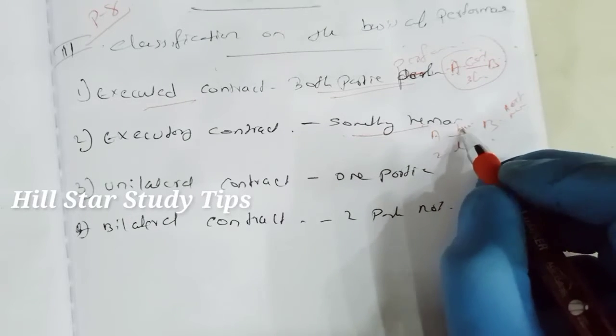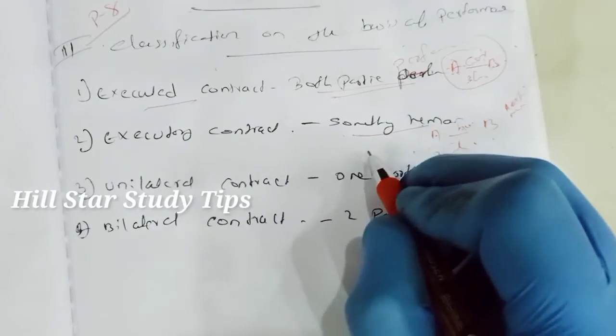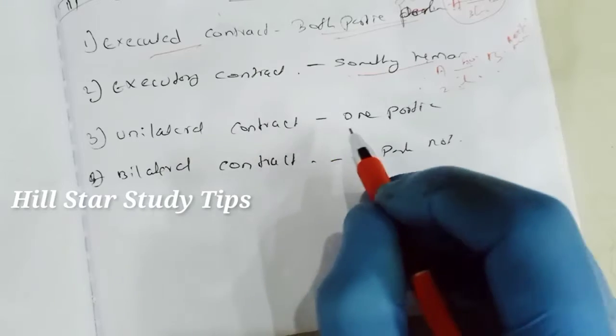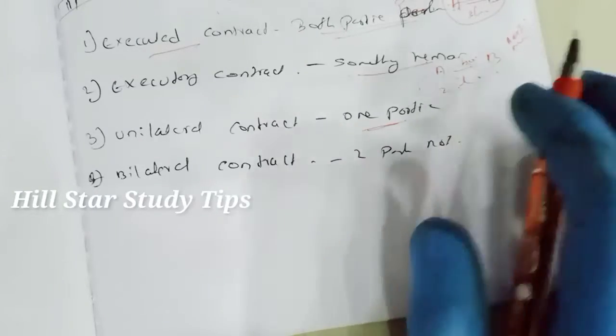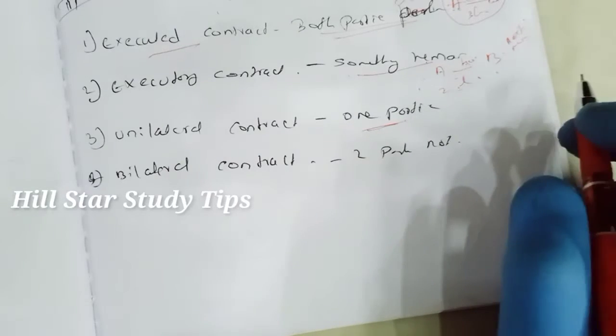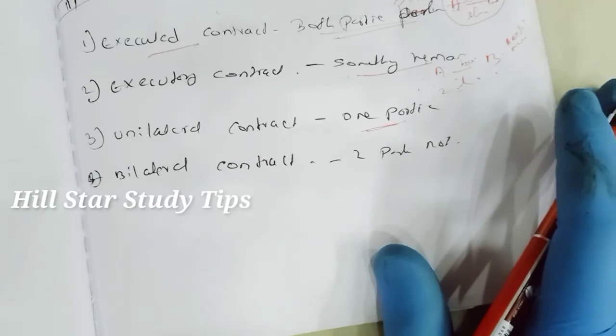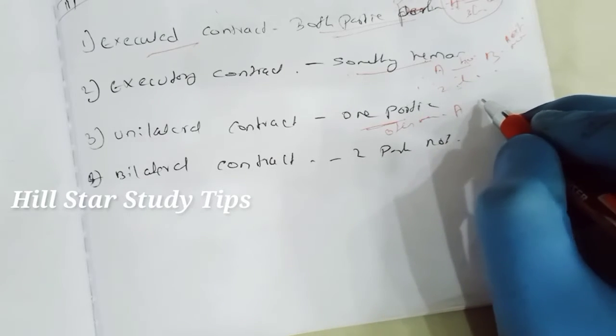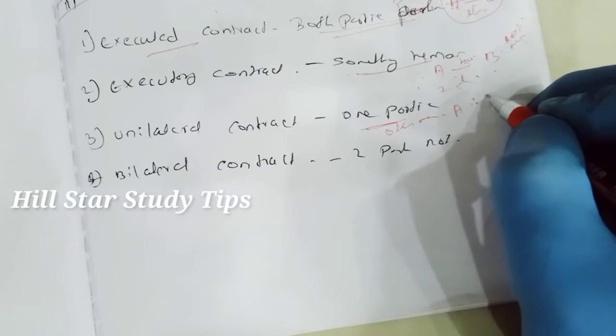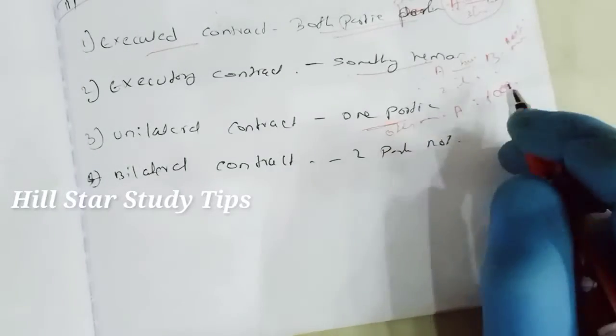In this unilateral contract, we will do the same thing. That is an agreement in which only one party makes a promise is unilateral contract. This is a promise to reward any person who finds his missing dog. In case there is no obligation on anyone, but if B finds it, A will be obliged to pay the reward to B. In this case, this is a typical example. This is an offer for reward.